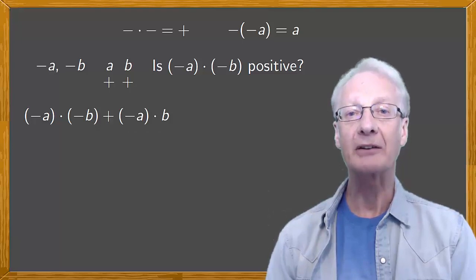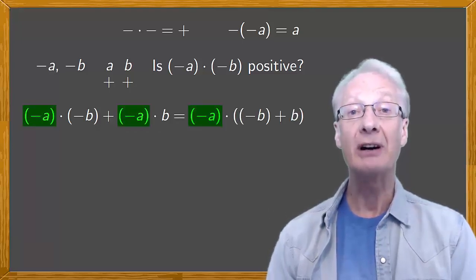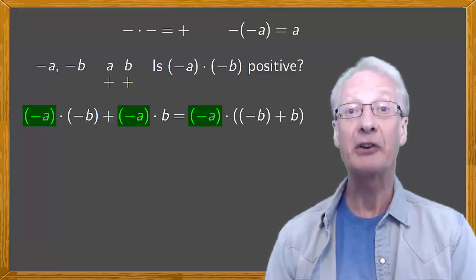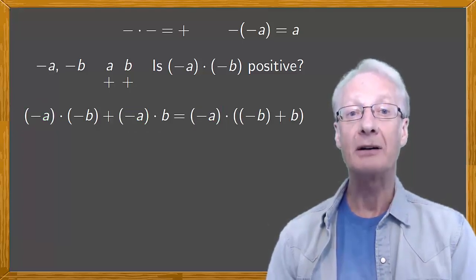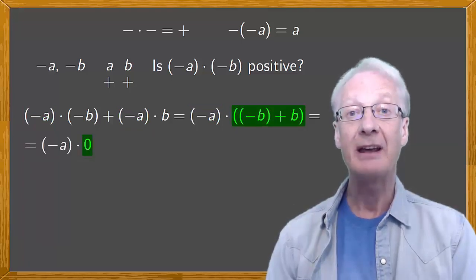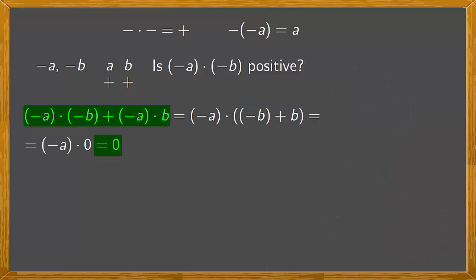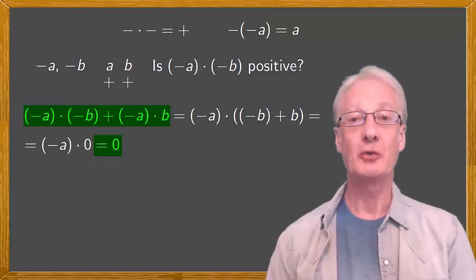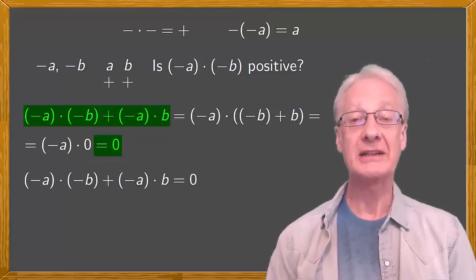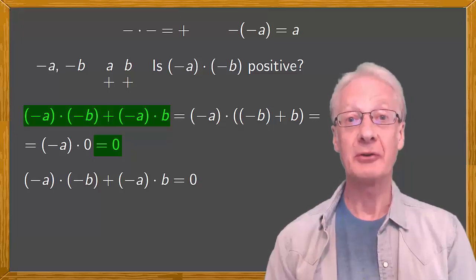Take out the common factor, negative a, so that we have negative a times negative b plus b. But negative b plus b equals zero. Anything times zero is zero. So, we've just demonstrated that negative a times negative b plus negative a times b equals zero.